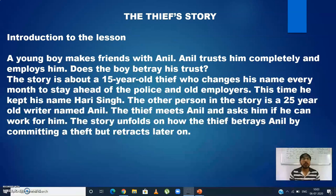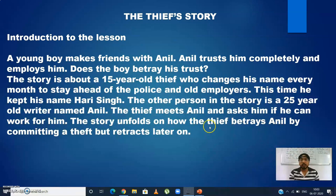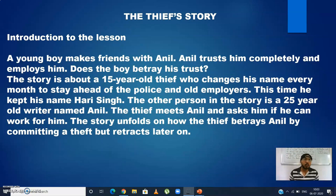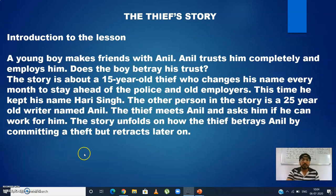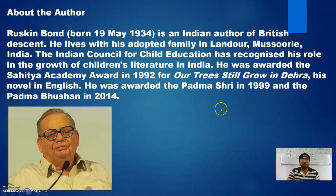Anil is a 25-year-old writer. The thief meets Anil and asks him if he can work for him. The story unfolds on how the thief betrays Anil by committing a theft but retracts later on. He robs Anil — as his nature is to find a new target every month and rob him — but later he realizes what he is doing is wrong and returns the money to Anil. Why did he return the money? What changed him? This is what we will see in the chapter. Two main characters: Anil, 25 years old author, and 15-year-old thief named Hari Singh.